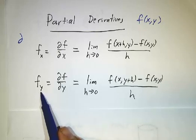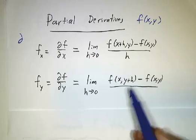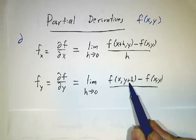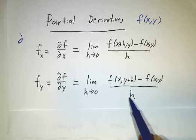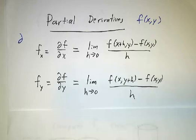Likewise, the partial derivative with respect to y, you vary y. You add h to y and you leave x fixed. Subtract off what you started, divide by h, and take a limit.